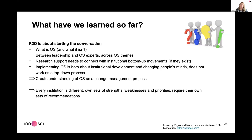Road to Openness is really about starting the conversation — asking what open science is, and initiating dialogue between leadership and institutional experts. It's also about connecting research support with bottom-up movements, which many institutions do have, particularly involving early career researchers interested in implementing open science. Implementing open science is both about institutional development and changing people's minds, so it really can't be understood as a purely top-down process — we need to think about it in terms of change management.